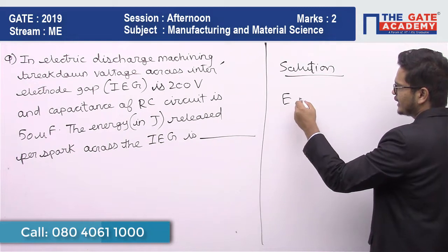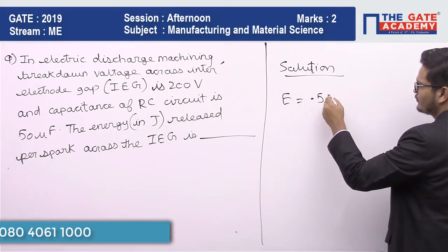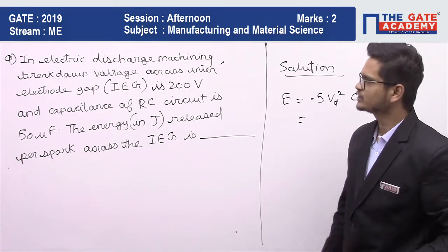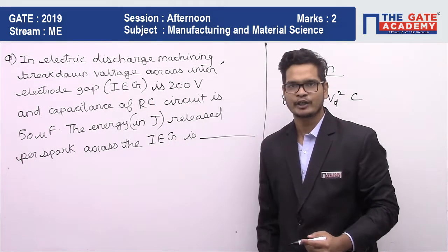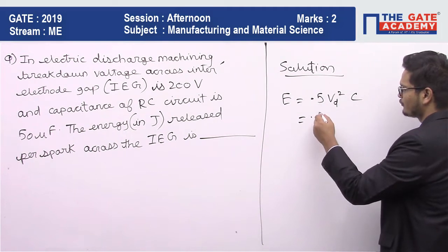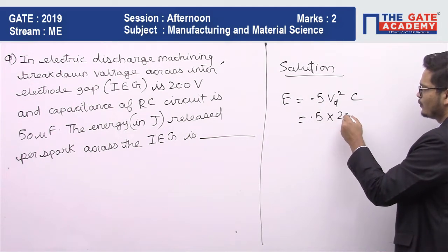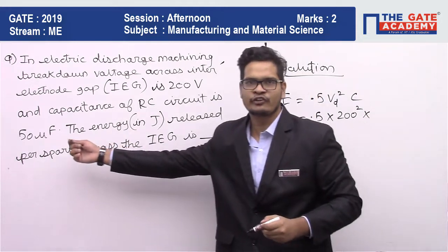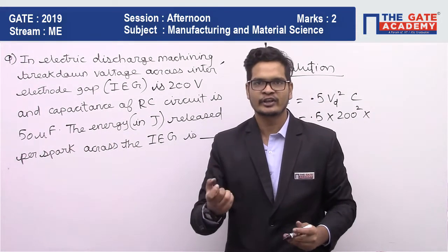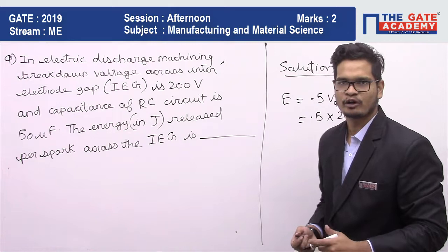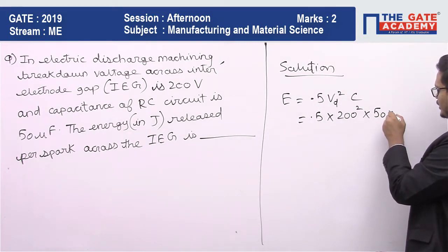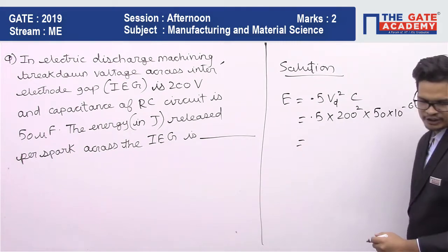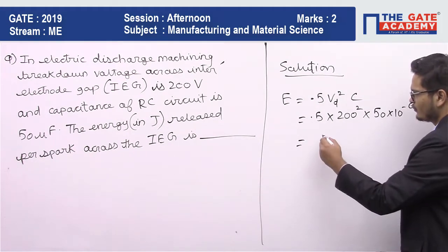Energy released E is equal to 0.5 × Vd² × C. Vd is the discharge voltage, or in our case the breakdown voltage, which is 200 volts. Capacitance is 50 microfarads, so we multiply by 10 to the power of minus 6. The answer comes out to be 1 joule. So this is the final answer.